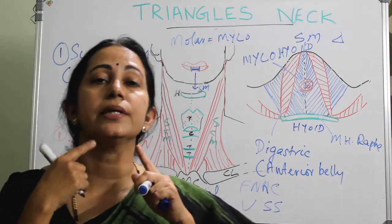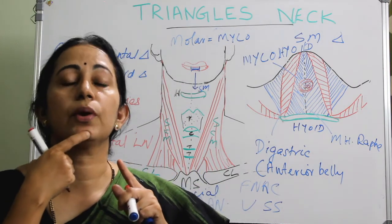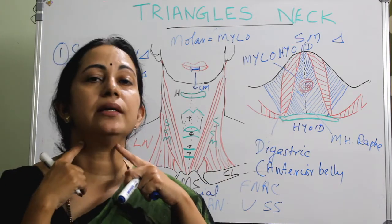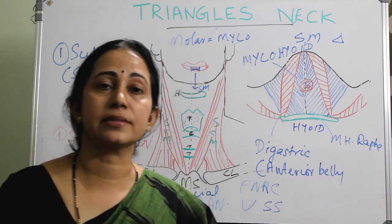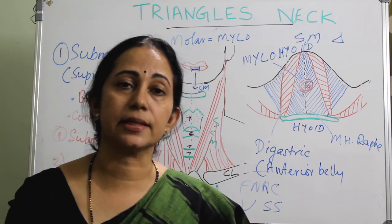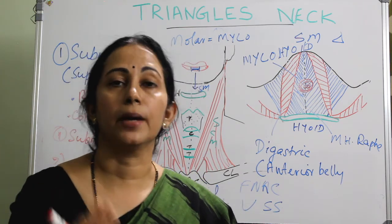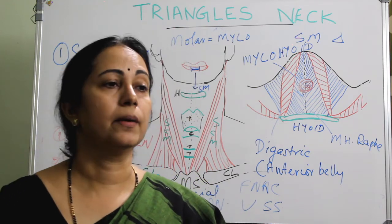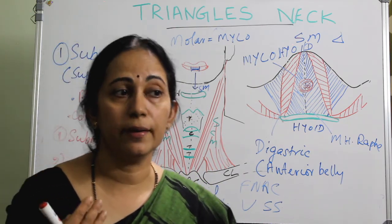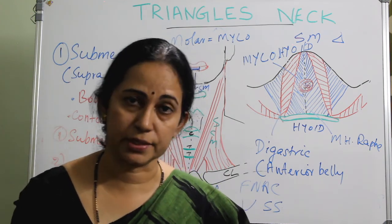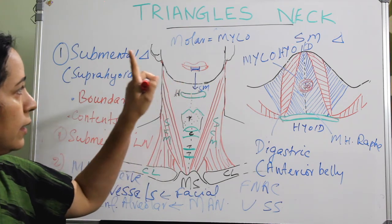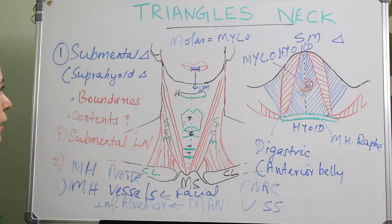To summarize: the boundaries are the chin as the apex, the hyoid bone below, and the anterior belly of digastric on both sides. The floor is formed by the mylohyoid muscle. The contents are the submental lymph node, the mylohyoid nerve (a branch of the inferior alveolar, branch of the mandibular division of trigeminal), and the mylohyoid vessels (branches of the facial artery). That concludes the submental or suprahyoid triangle.